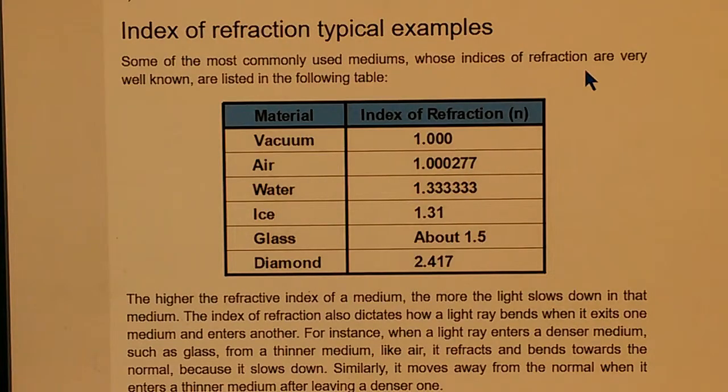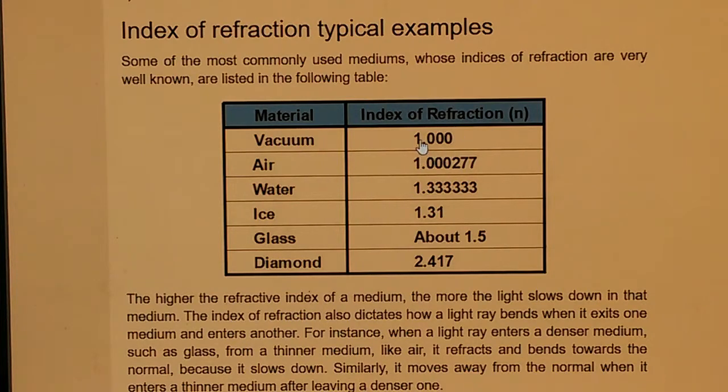Now these are some typical index of refractions. Of course, again, in a vacuum, the speed of light is the speed of light. So the ratio is 1.0000 by definition. Now in the atmosphere, it's only slightly higher than a vacuum.